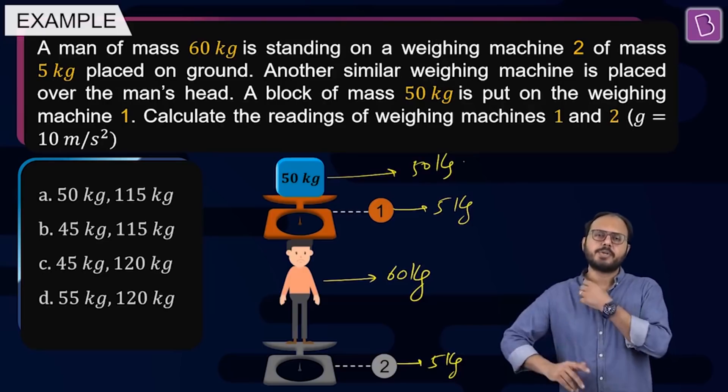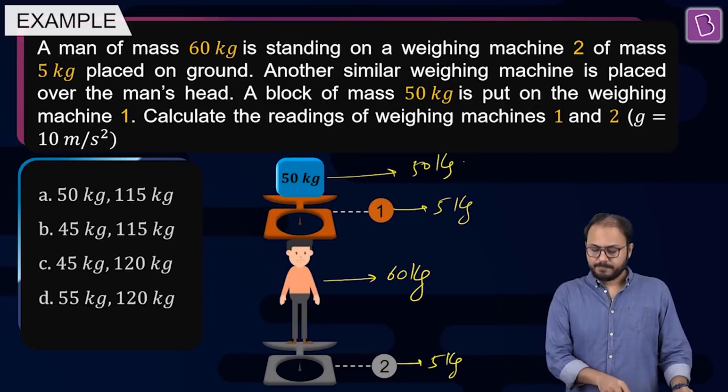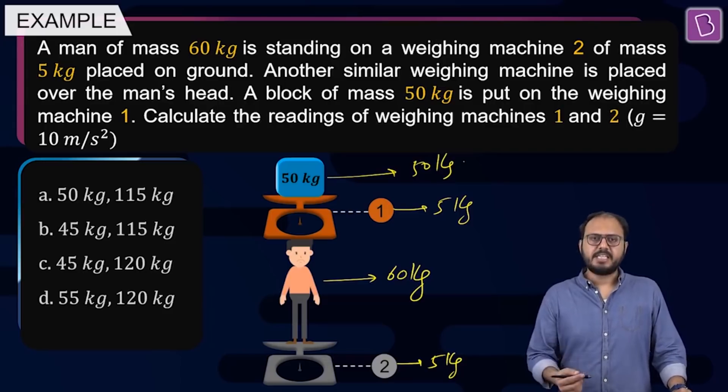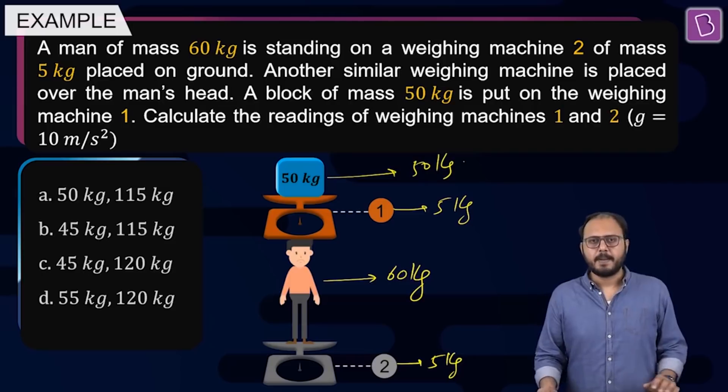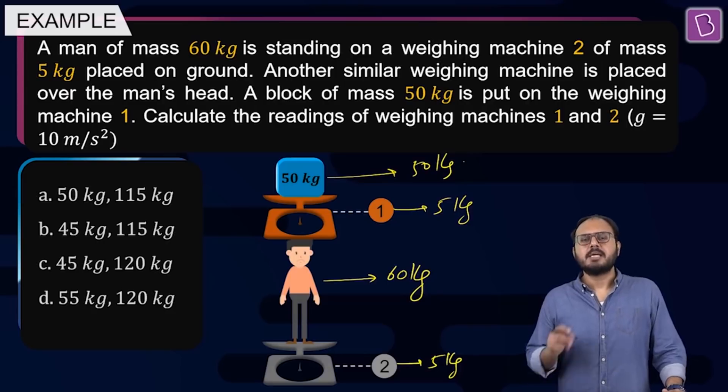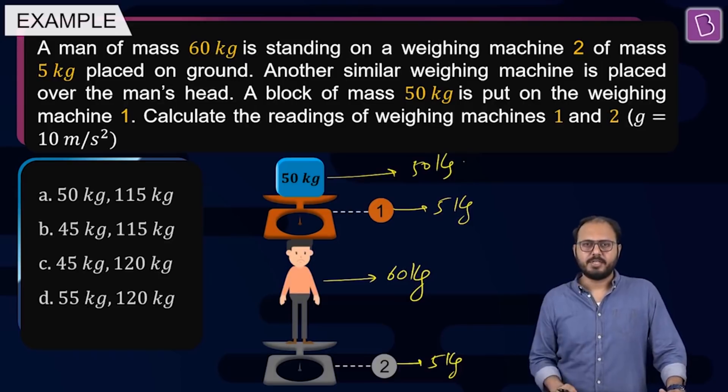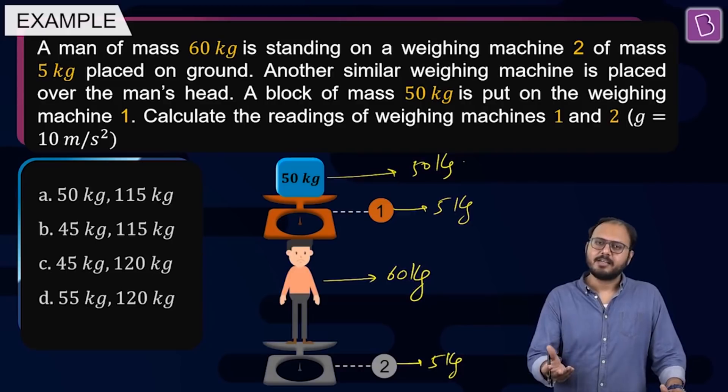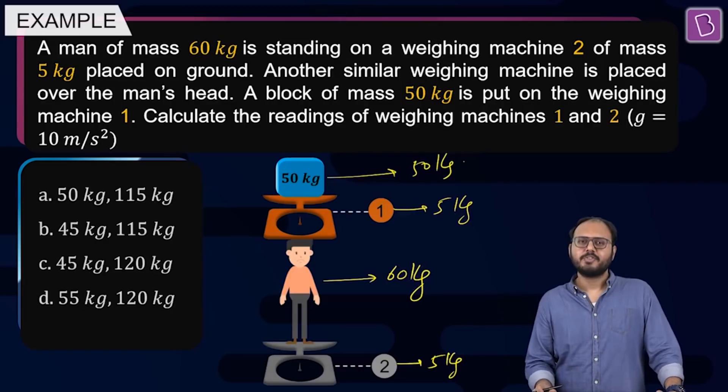Read the question. I'll give you 10 seconds to read the question again. See the arrangement. 50 kg. Weighing machine itself is 5 kg. 60 kg the man. And weighing machine 2 is identical. Again, 5 kg. I want the reading of 1 and 2. What does the weighing machine measure? Sir, weighing machine measures the normal force acting on the weighing machine. That means I will find out the normal reaction on machine 1 and machine 2. And that is my answer. Agreed or not? Yes, sir. Agreed. Perfect. Shall we start? Very simple.